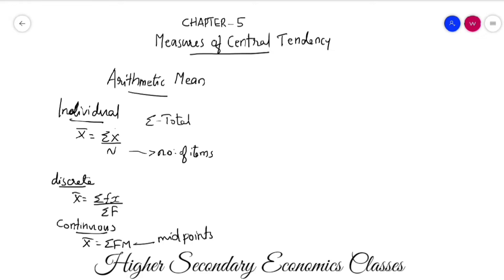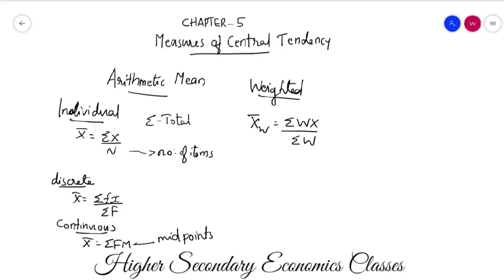Now we are going to study the weighted arithmetic mean. The formula for weighted arithmetic mean is sigma wx divided by sigma w. Here, w represents the weights assigned to each value.